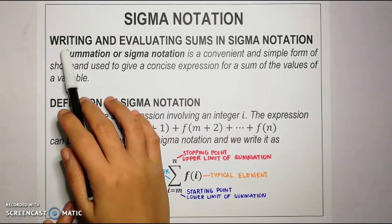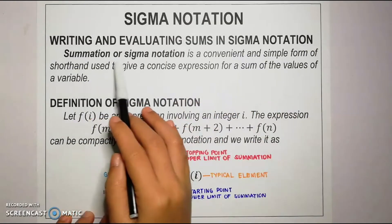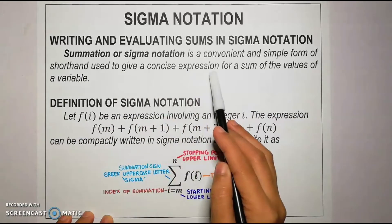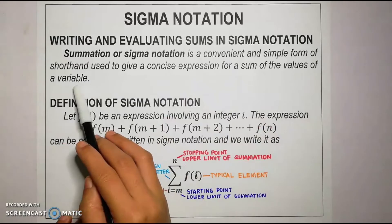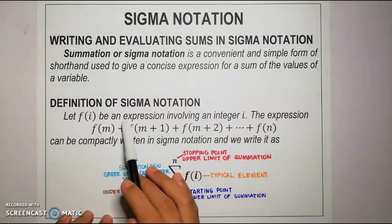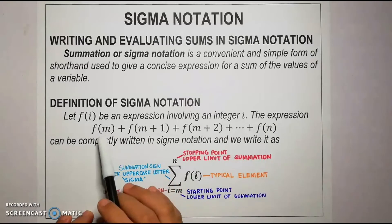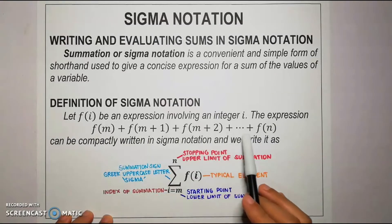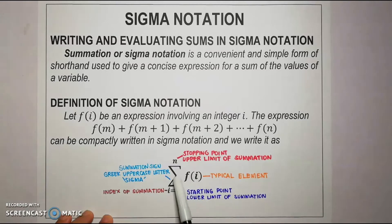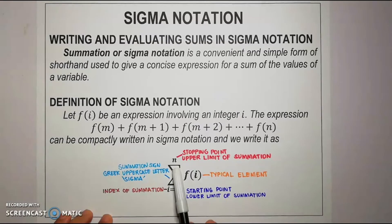Our subtopic for today is about writing and evaluating sums in sigma notation. Summation or sigma notation is a convenient and simple form of shorthand used to give a concise expression for a sum of the values of a variable. We will let f of i be an expression involving an integer i. The expression is expanded in the form f of m plus f of m plus 1 plus f of m plus 2 until f of n, which can be compactly written in sigma notation as the summation of f of i from i equals m to n.